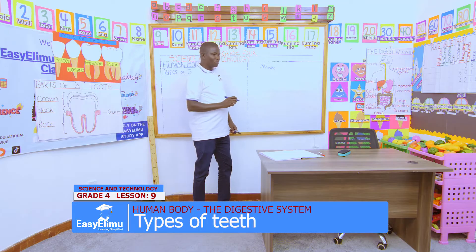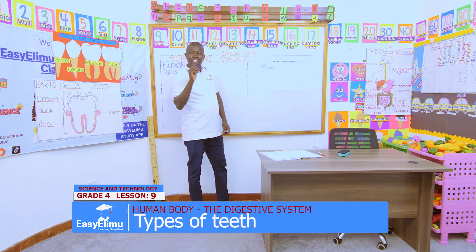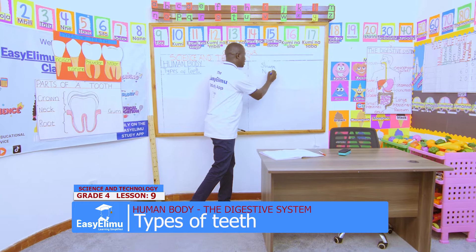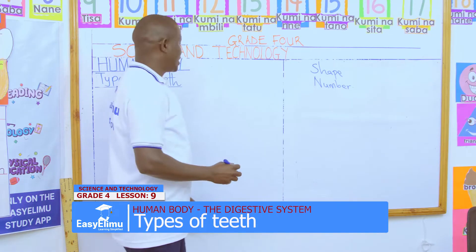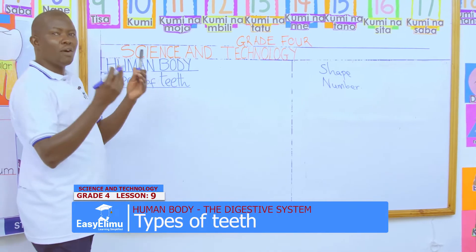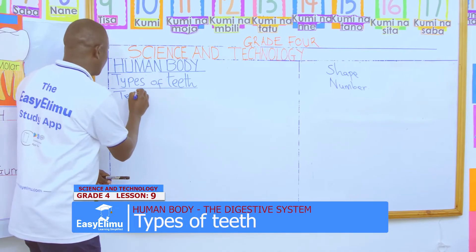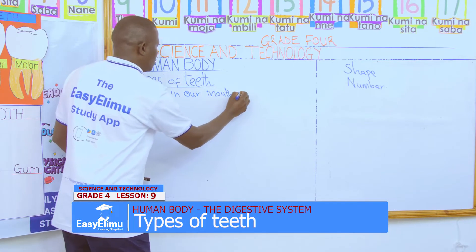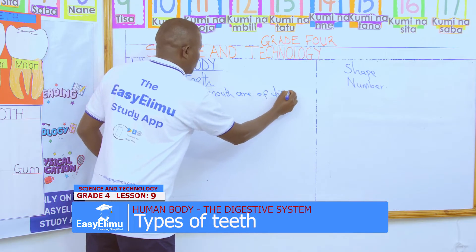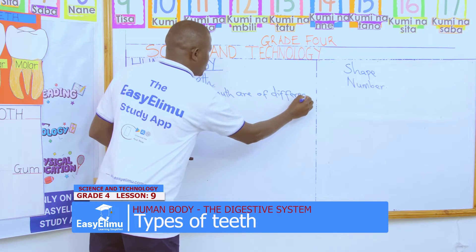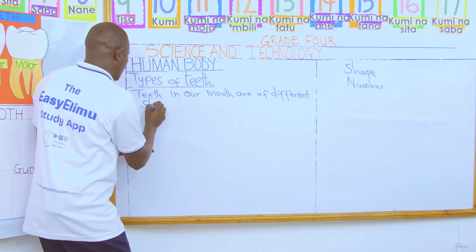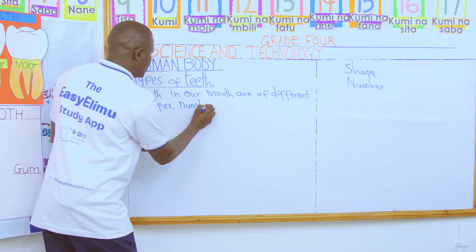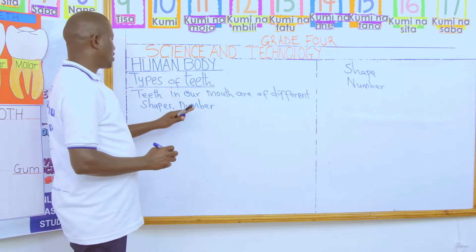And you, Wangare, does the number of the teeth in the mouth of your partner are the same as the one you have? The number of teeth, they are not the same. So we say, teeth in our mouth are of different shapes. Even the number, they are not of the same number. They are different — shape and number are different.